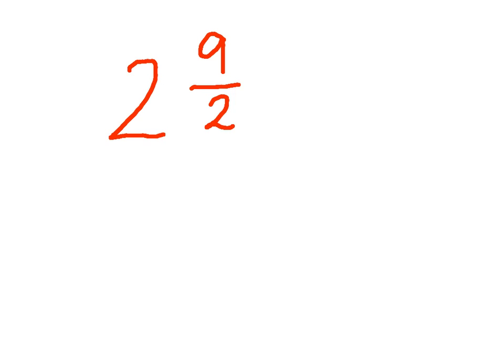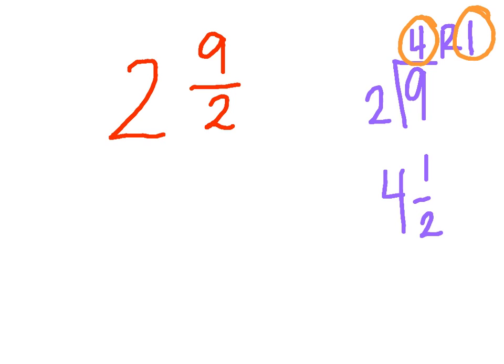So the first thing that I'm going to do is take 9 divided by 2. And I know 9 divided by 2 is going to be 4, and there's going to be a remainder of 1. So my new number for 9 halves is going to be 4 and 1 half. I got the 4 from when I divided, the remainder is 1, and the half comes from the 2, the divisor.